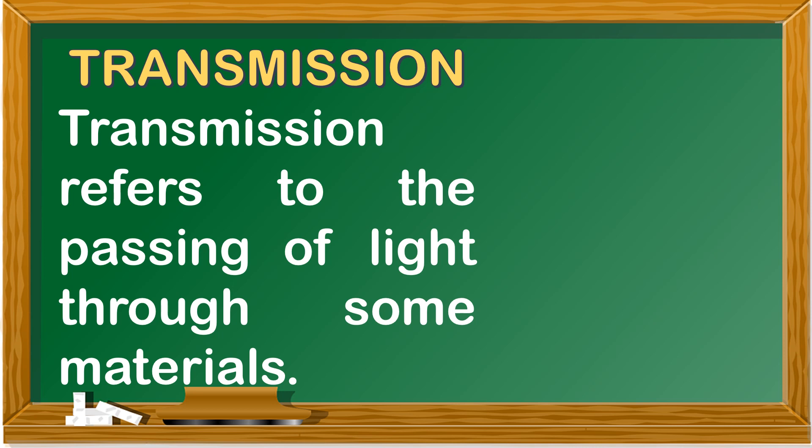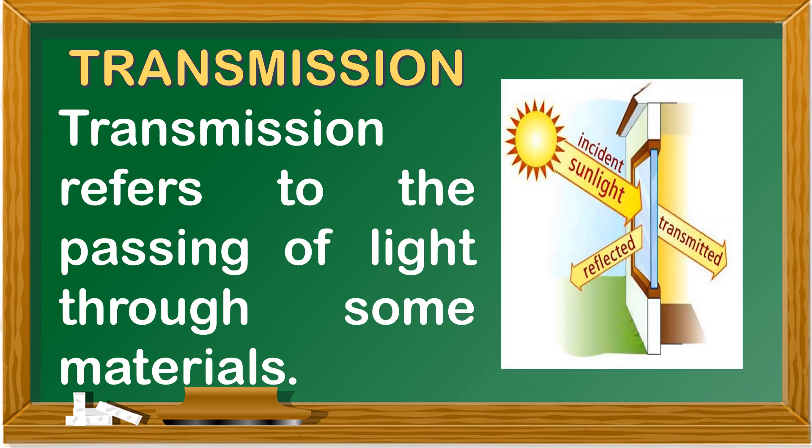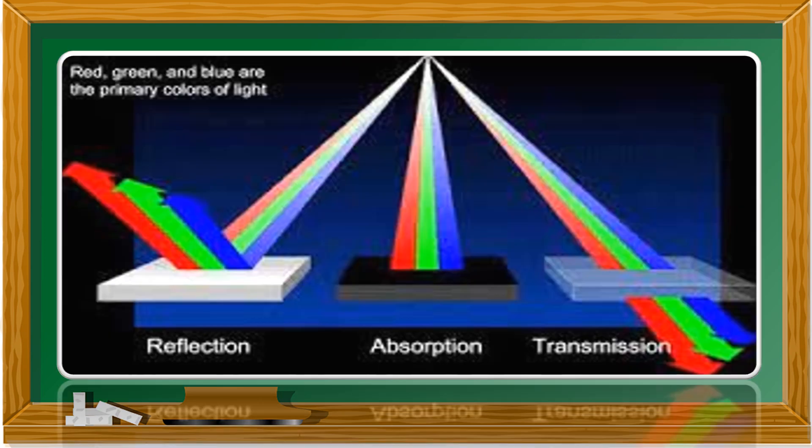Transmission refers to the passing of light through some materials. For example, when light passes through a glass window, it is transmitted to the other side, allowing the light to pass through. This picture shows the reflection, absorption, and transmission of light.